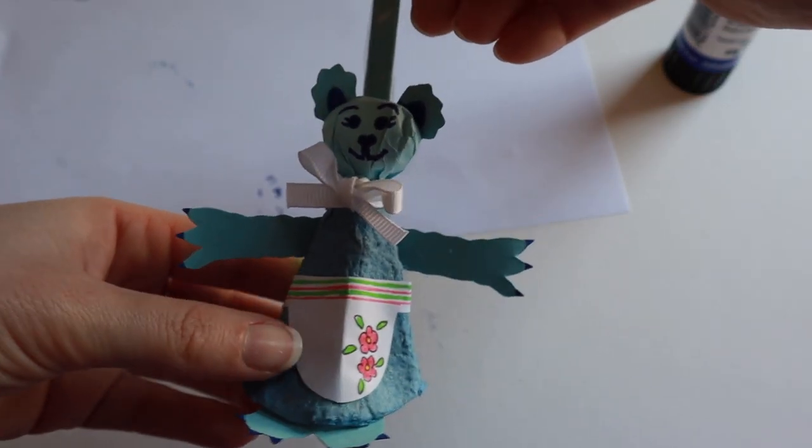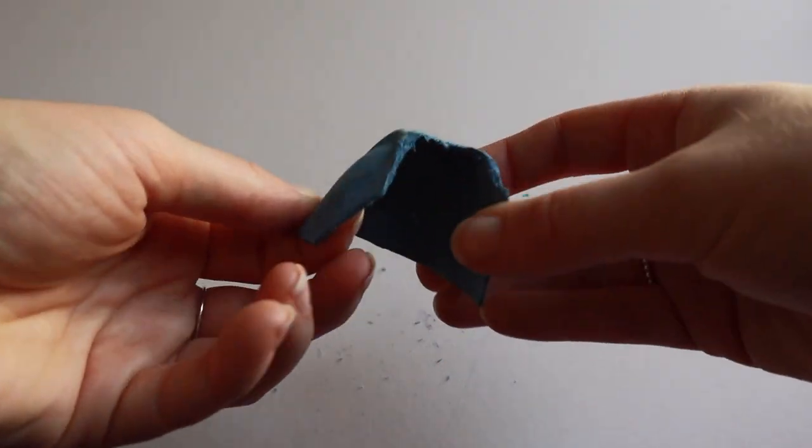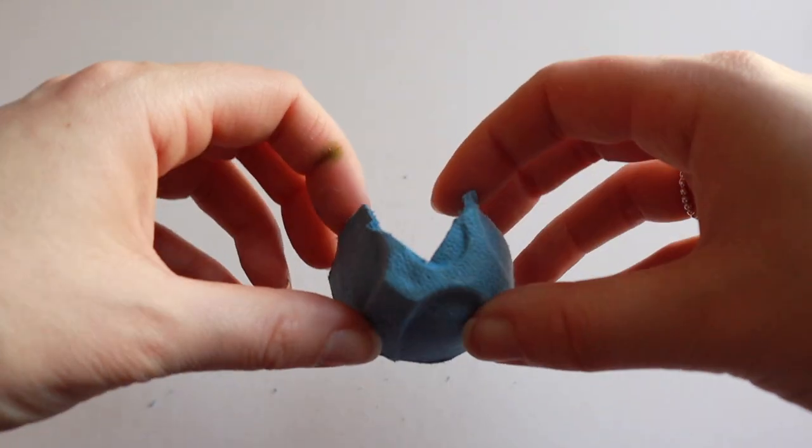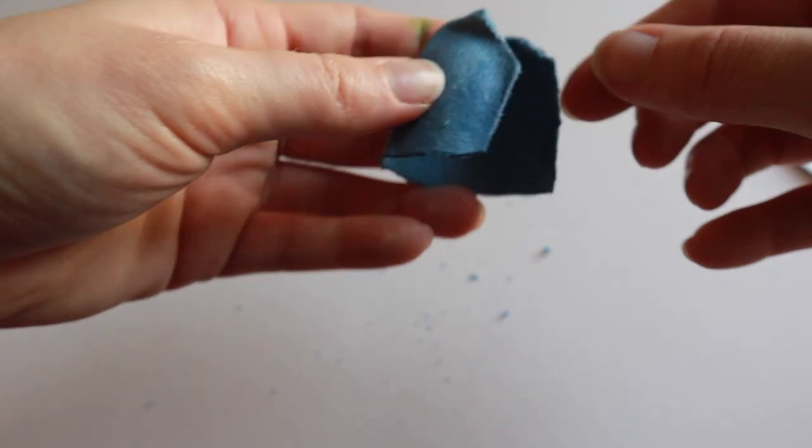Now I'm going to show you how to make a smaller puppet character. Cut out one of the rounded bits from your egg box. You need to cut a V shape into the top of it.